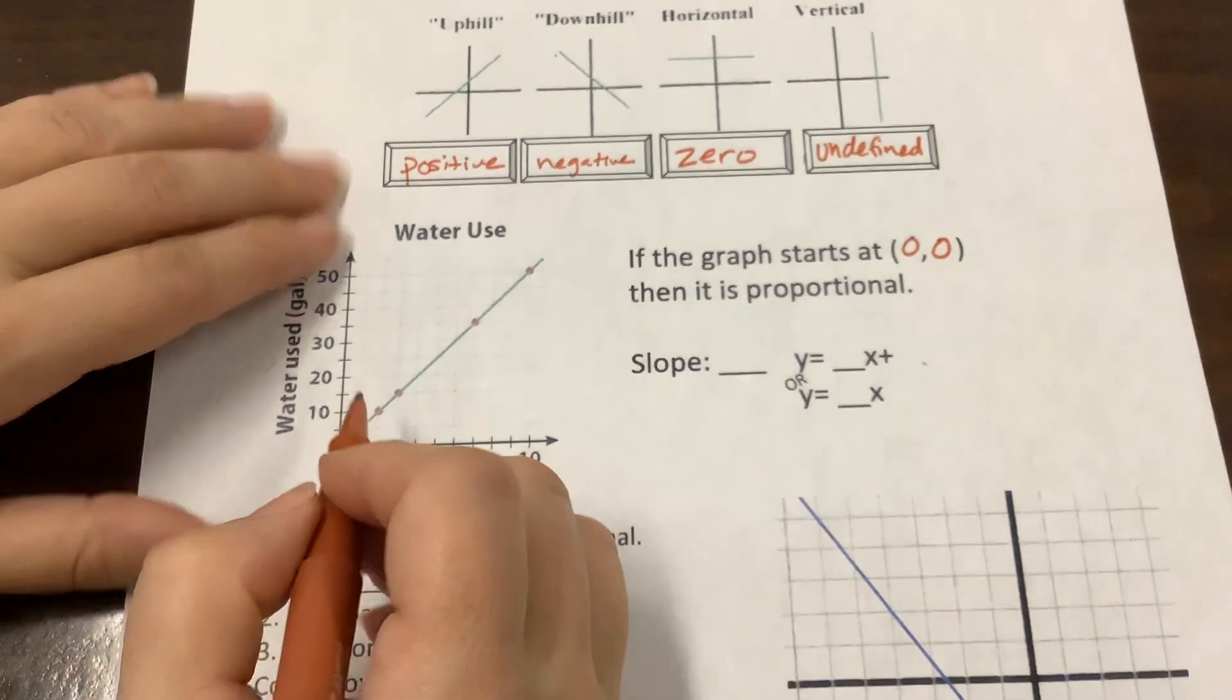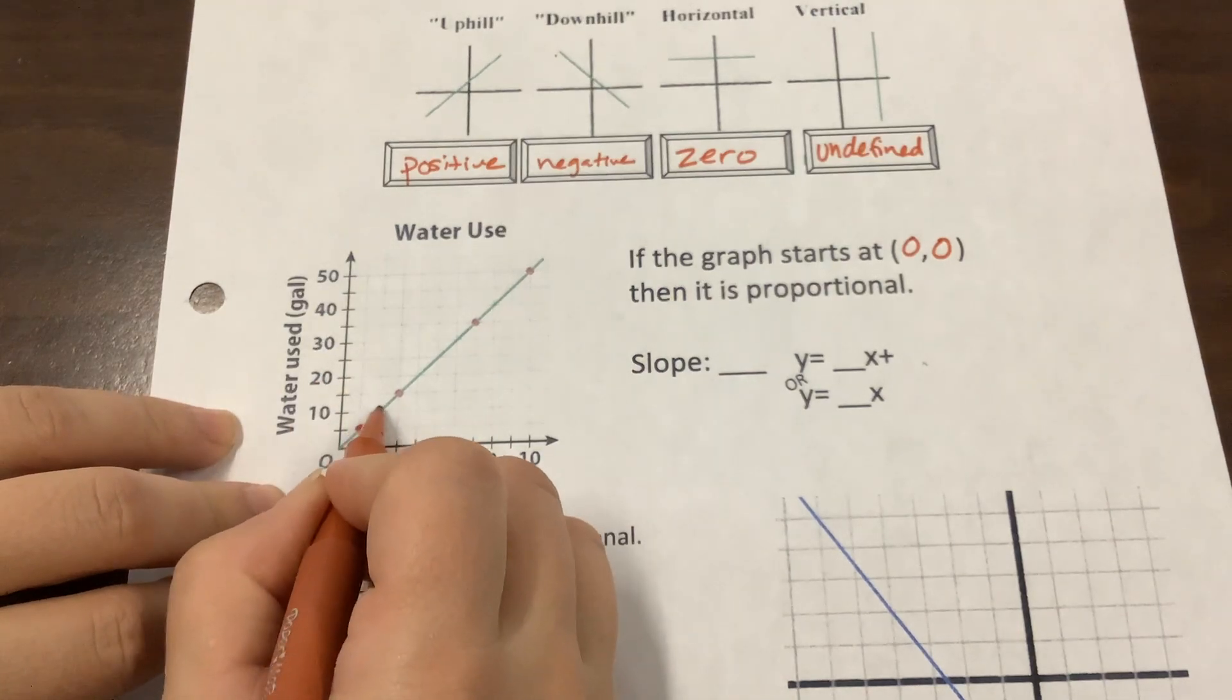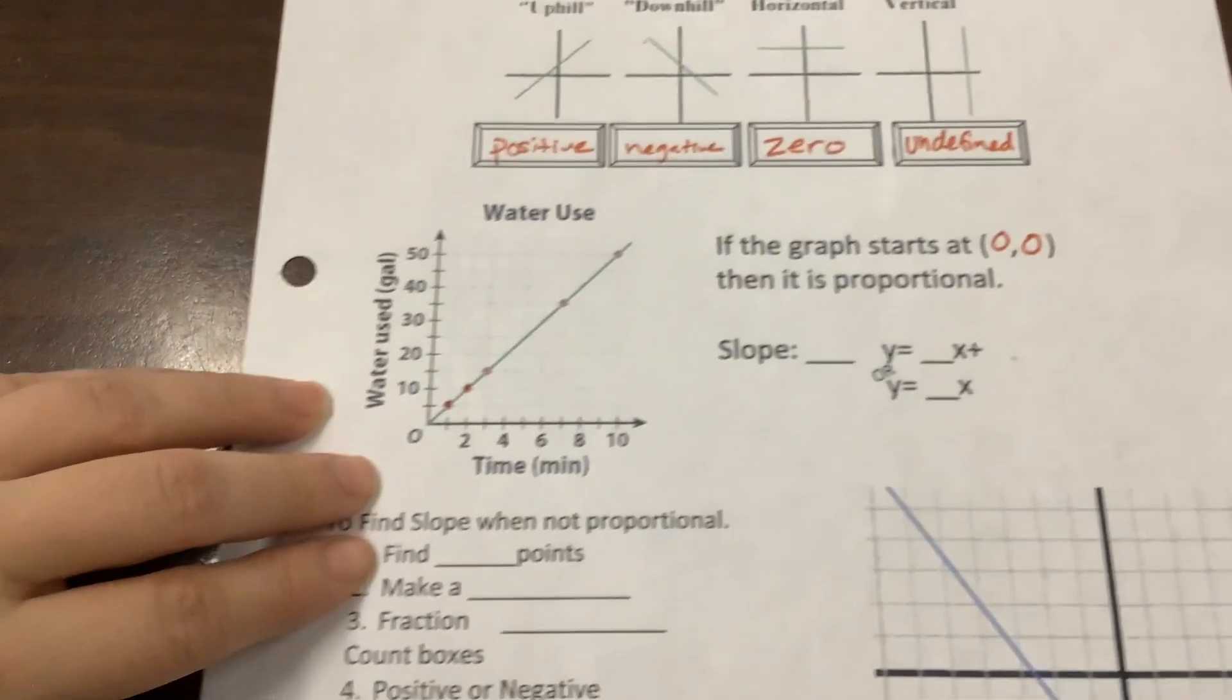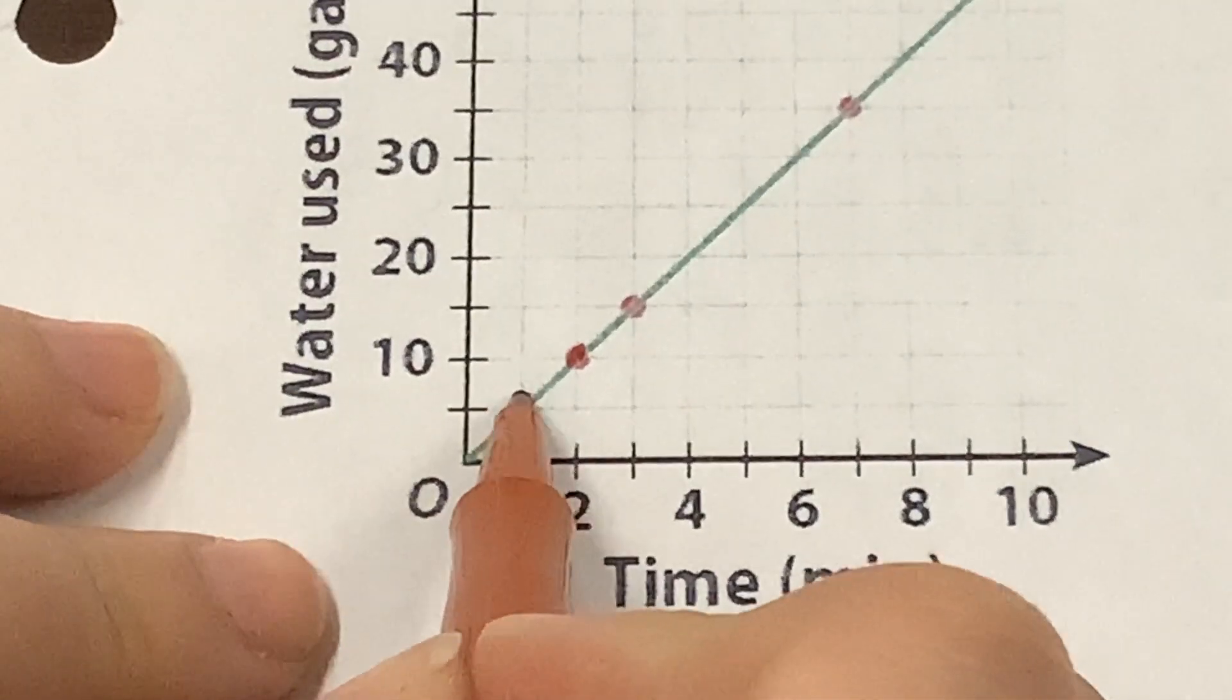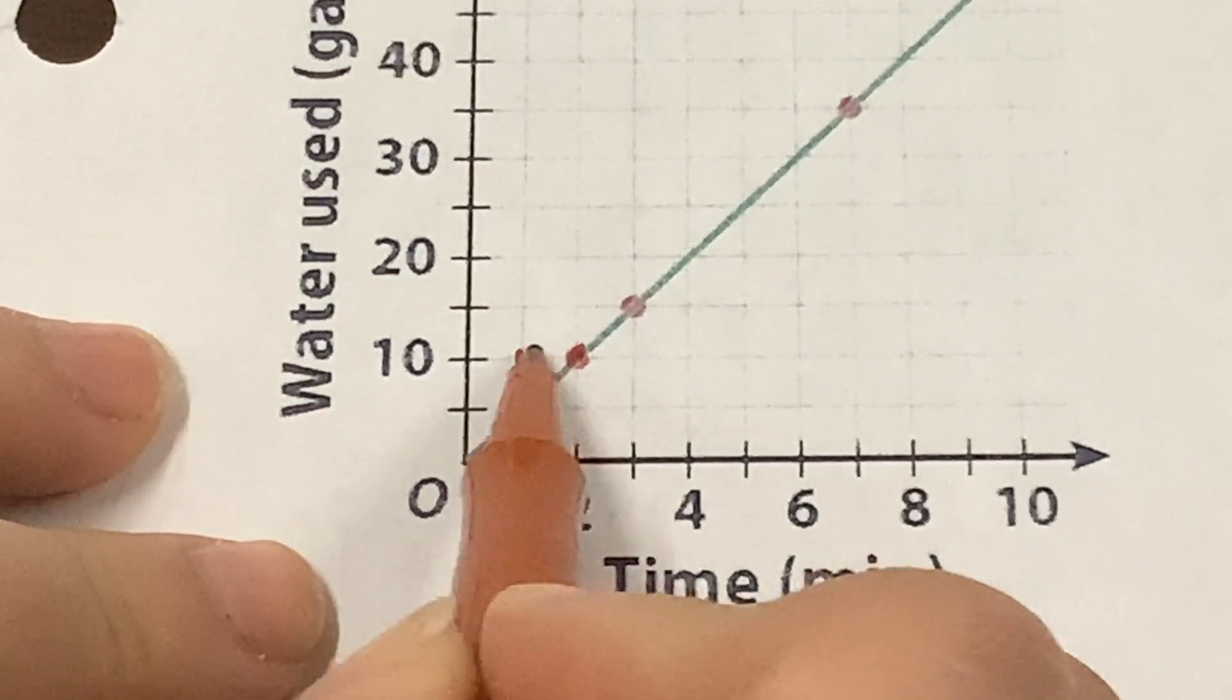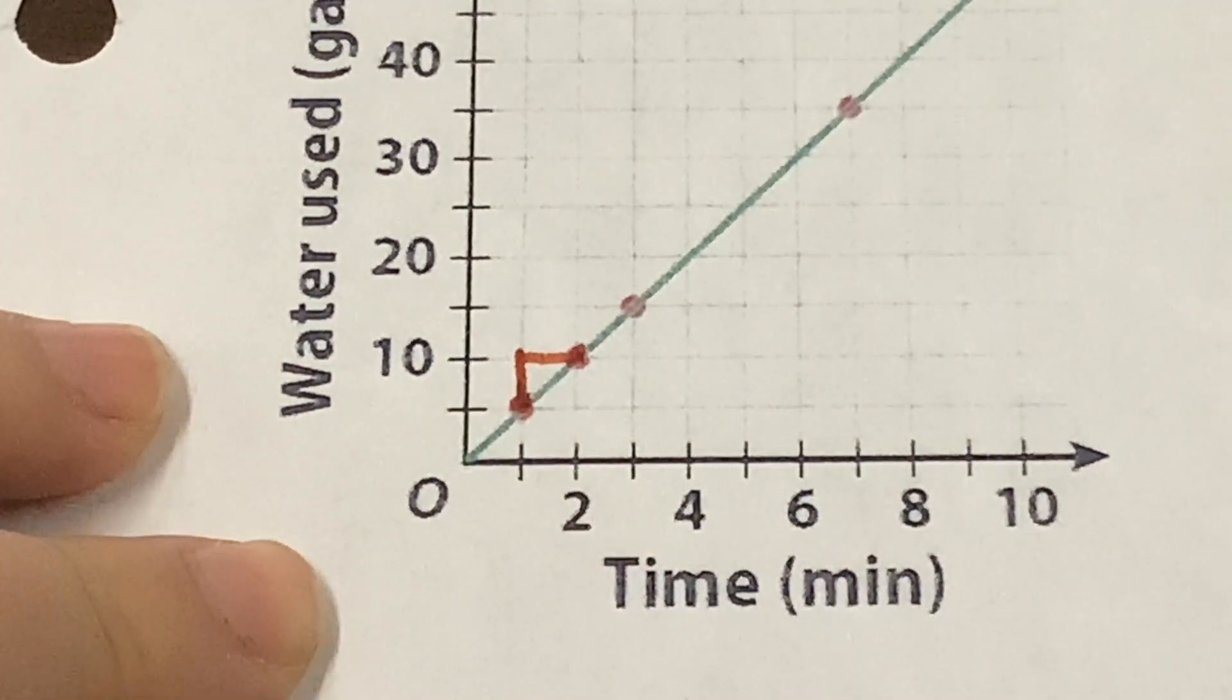Okay, so on this one, if we count the rise and run, we're talking about from one point to the next, how far up and over. So how far up, and we're counting the length of the boxes, how far up is this increasing? Five. And it's, so up five, and how far over? One. One.